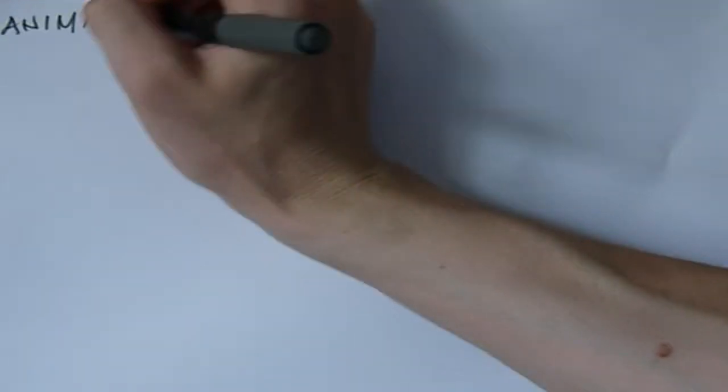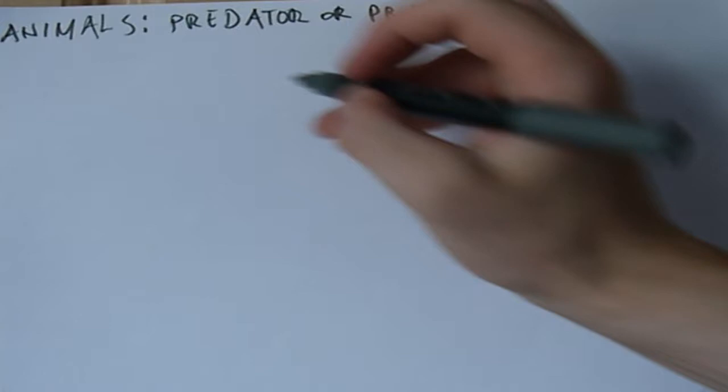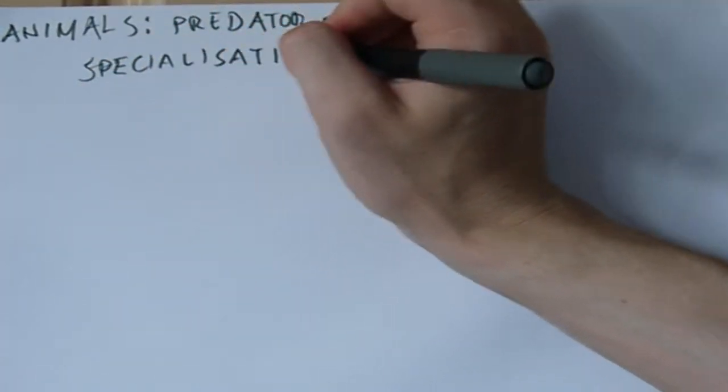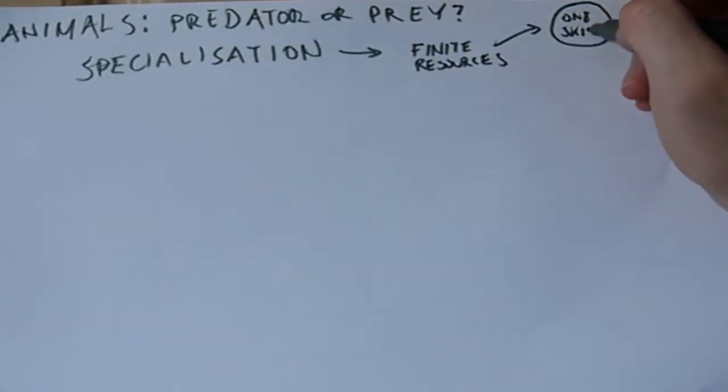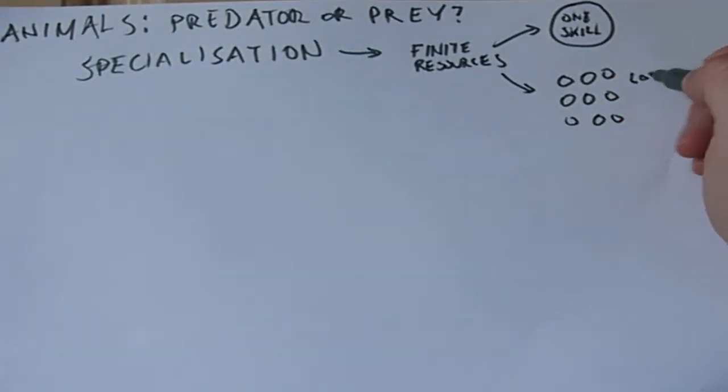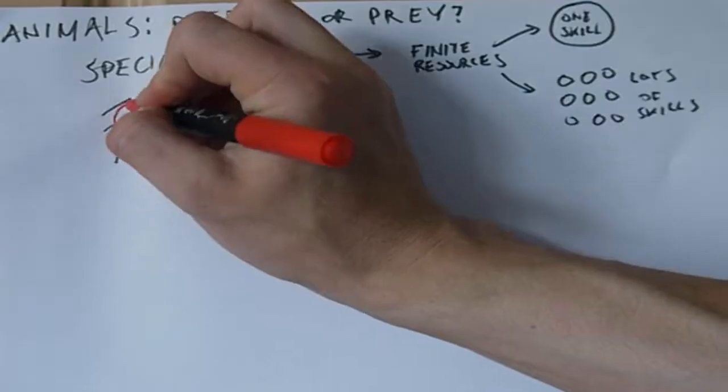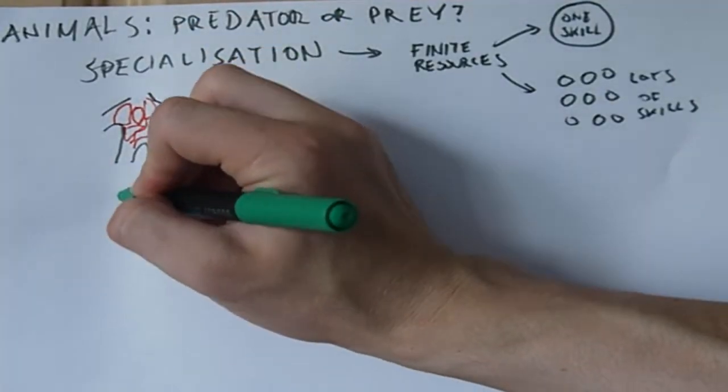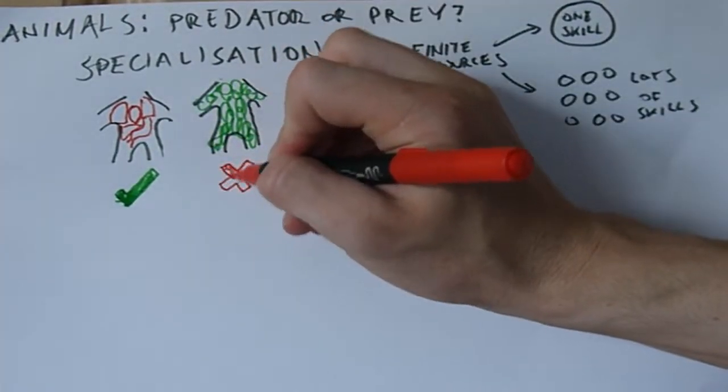Now let's talk about animals. You need to tell the difference between predator and prey. The most important principle here is specialization. The idea that it's better to focus on being really good at just one thing than being mediocre at lots of things like a jack of all trades.